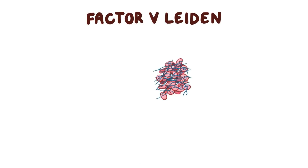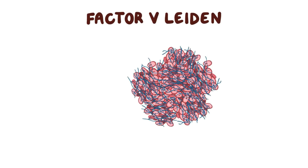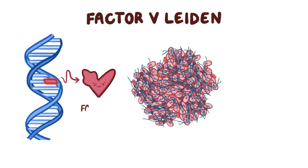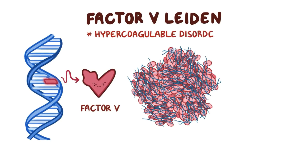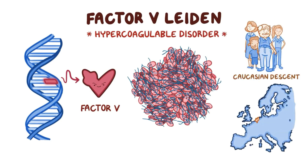Factor V Leiden is a disorder where blood clots form more easily due to a mutation in a clotting protein called Factor V. Factor V Leiden is the most common hypercoagulable disorder in people of Caucasian descent and was named after the town Leiden in Holland where the disease was first described.